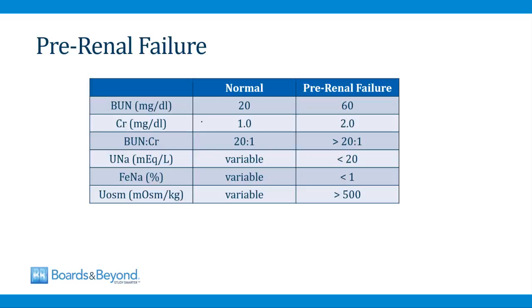Here's a summary of the expected laboratory findings in a patient with pre-renal failure. The BUN can go up by as much as a factor of three — for example from 20 to 60. The creatinine also rises but not to the same degree; in this example it goes from 1 to 2. The normal ratio of BUN to creatinine is 20 to 1, but it gets higher in pre-renal failure because the BUN goes up by more than the creatinine. In a patient with pre-renal failure, you should have a low urinary sodium, a low FENa, and a high urinary osmolarity.